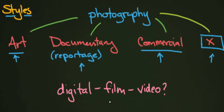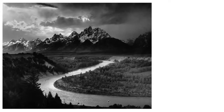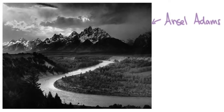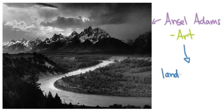Let's take a look at some different examples of photography. Here we have Ansel Adams, an American photographer who worked in the 20th century. Ansel Adams is your quintessential landscape photographer, and he was shooting in the style of an art photographer. Sometimes he did the occasional commercial piece, but in general he was a landscape photographer who was an art photographer. Landscape was his specialty, but he was an art photographer.